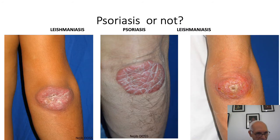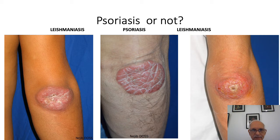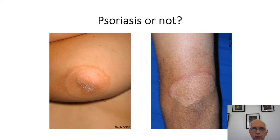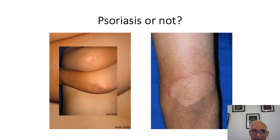We have three erythematous scaly lesions on the elbows in three different patients — it was leishmania, psoriasis, and leishmania again. We also have erythematous lesions with slight delicate scaling on the elbows — it was tinea and psoriasis.